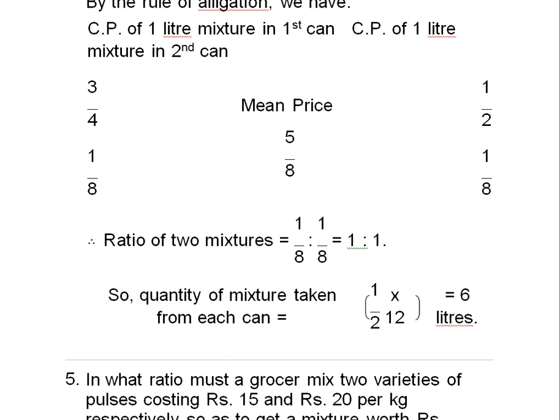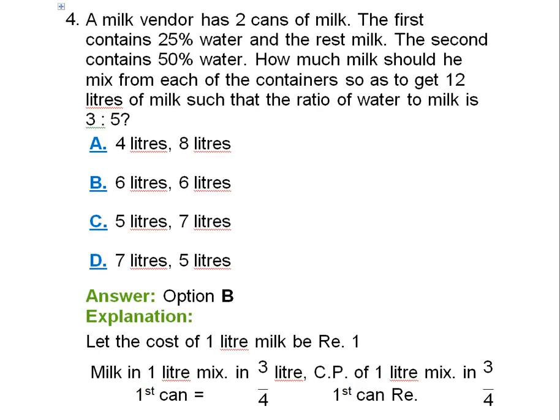So the quantity of mixture taken from each can is 1/2 into 12, that is 6 liters. And so the answer is option B, 6 liters, 6 liters.